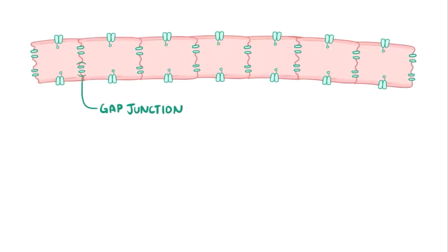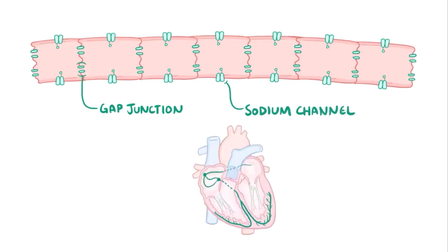Alright, as a quick recap, the conduction velocity of depolarization waves in the heart depends on things like the gap junctions between adjacent cells as well as the voltage-gated sodium channels on the cells. The total time it takes for a depolarization wave to move through the heart is about 220 ms.